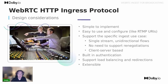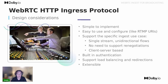The goal of WHIP is to have WebRTC support on as many encoders and devices as possible. We need to make it simple to implement for developers and easy to configure for end users. Since we only need to support the specific ingest use case, we can focus on a subset of WebRTC functionality — requiring only a single unidirectional stream and no real negotiation. Being client-server based has also allowed us to lower requirements by reducing WebRTC optionalities.